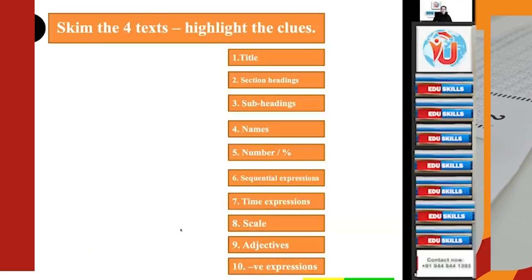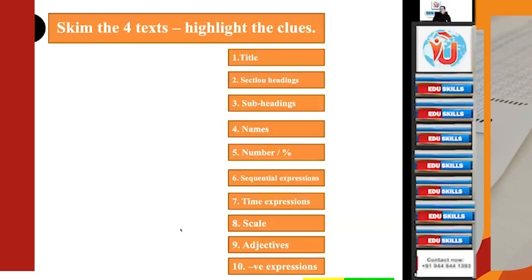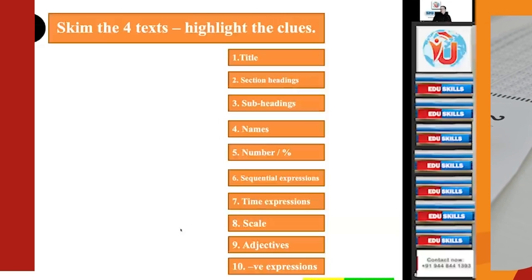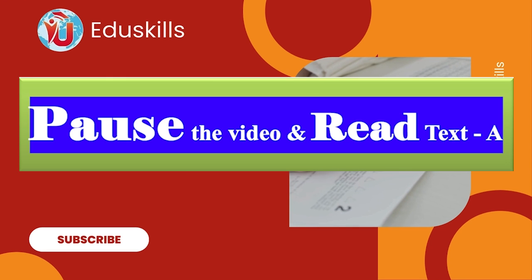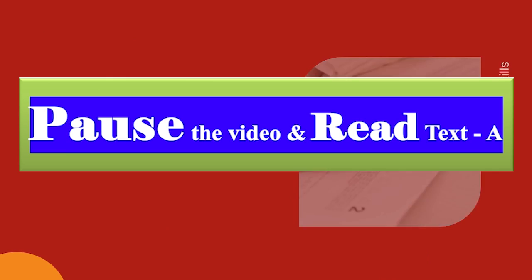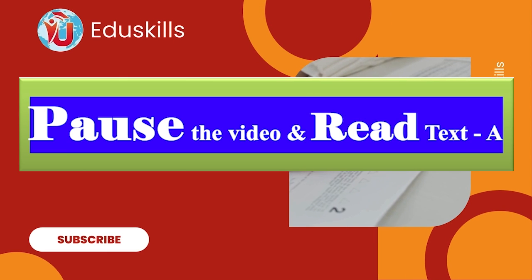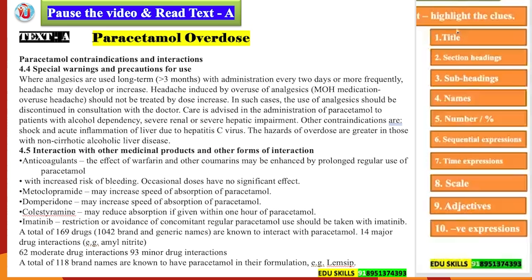I have taken a very familiar text because we need a familiar text to do the analysis; otherwise you may not understand the meaning and the connotations. For Text A, as we read through, try to underline and identify these clues. I have given the clues on the side — underline those things.